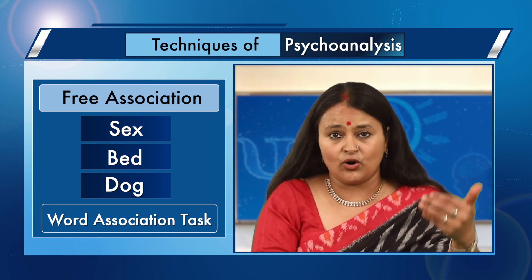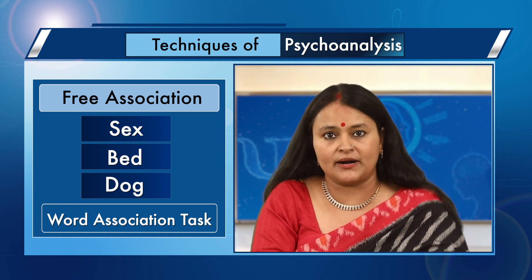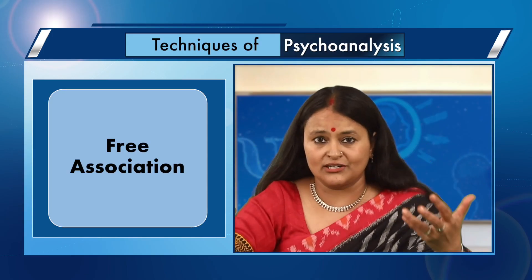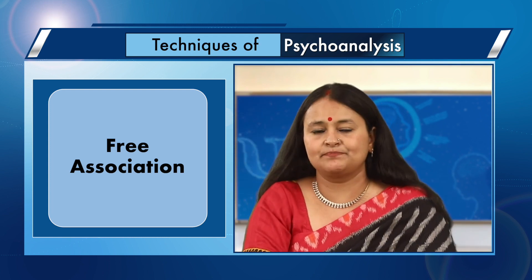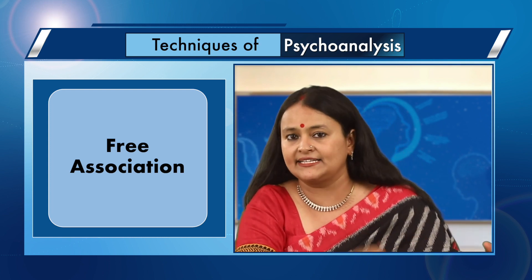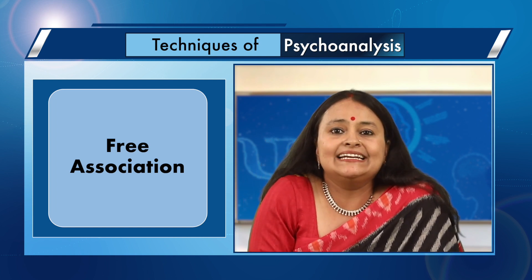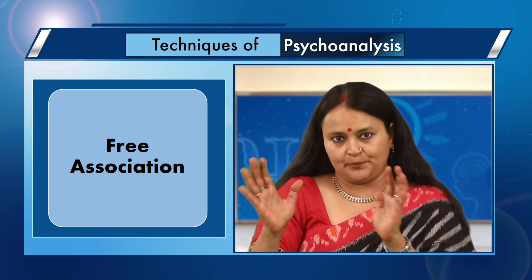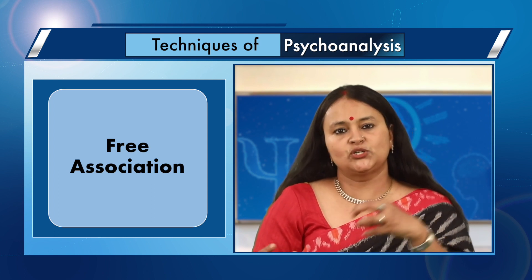Special attention is given to any resistance the client shows during free association — such as blocking thoughts. At the words 'sex,' 'bed,' or 'dark,' were you able to speak freely or was there resistance? Resistance is the reaction of the ego to any anxiety-arousing repressed material. As that material surfaces through free association, it causes anxiety and the ego tries to repress it back. The task of the analyst is to identify the repressed material and see the connections between events.